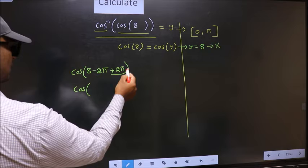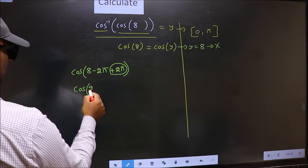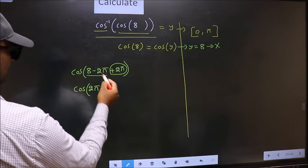Cos. This 2π, now I write at the start. Followed by this in the brackets.